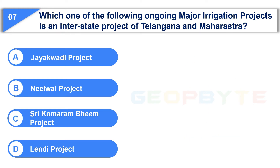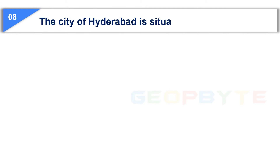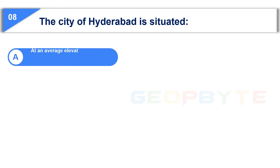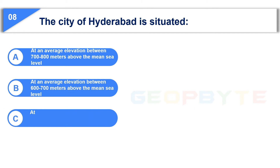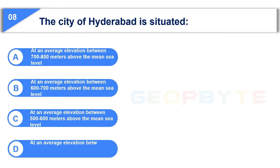Your time is up and the correct answer is Option D: Lendi project. The eighth question is: The city of Hyderabad is situated — Option A: at an average elevation between 700 to 800 meters above mean sea level, Option B: 600 to 700 meters, Option C: 500 to 600 meters, Option D: 400 to 500 meters above mean sea level. Your time starts now.